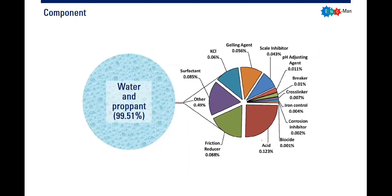The component — almost 99 percent or even higher — of fracturing fluid is actually water. The smaller parts consist of surfactant to maintain the wettability of the reservoir, KCl as a swelling inhibitor, scale inhibitor, pH adjusting agent, breaker, cross-linker, iron control, corrosion inhibitor, biocide, and friction reducer. But again, the main component is water.